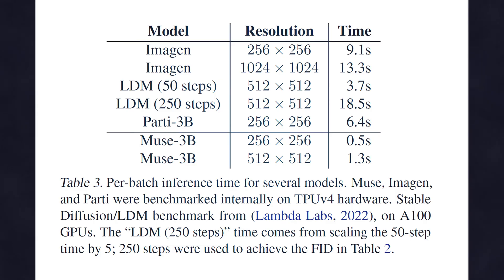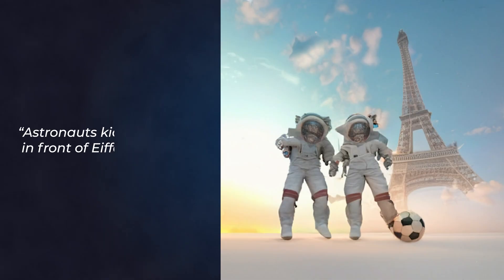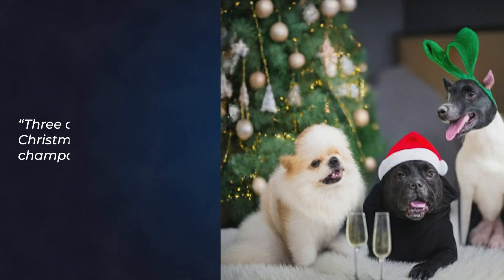Whereas Muse can generate 512×512 images in 1.3 seconds — no other text-to-image generator can produce high-quality images at this record speed.